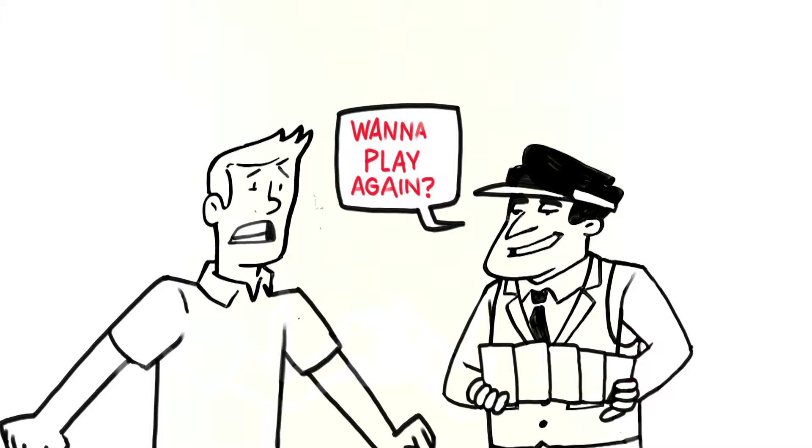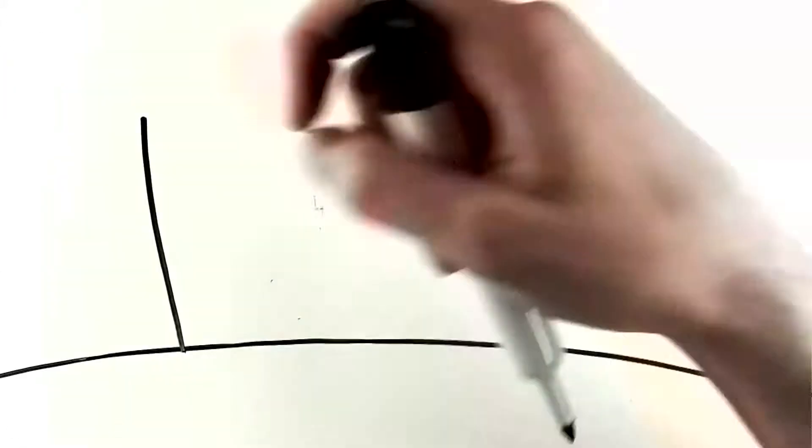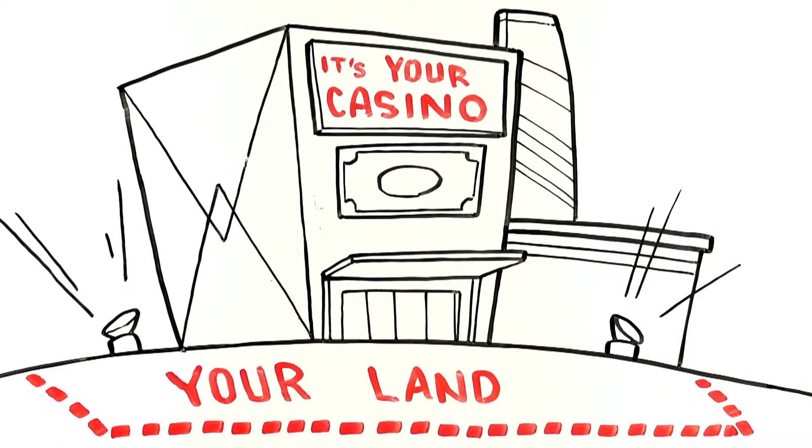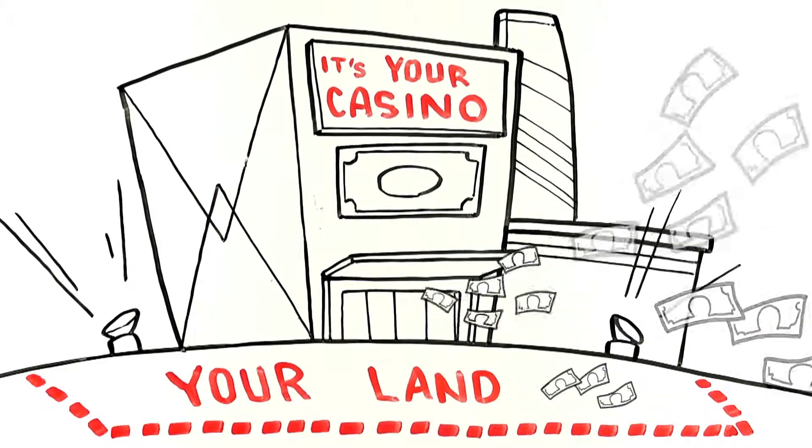Tom knew there had to be a better way. That's when Tom's buddy Sam told him about two-dimensional investments. With a two-dimensional investment, now it's like you own the casino and the land beneath it. You own a business that produces incredible profits, while the real estate it's sitting on appreciates in value.